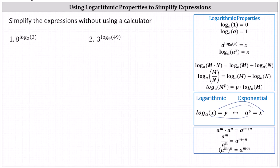Because we have an exponential term where the exponent is a logarithm, we're probably thinking we should apply the log property: a to the power of log base a of x equals x. However, right now the expression is not in the correct form to apply the property. Notice that to apply the property, the base of the exponential term and the base of the logarithmic exponent must both be a.